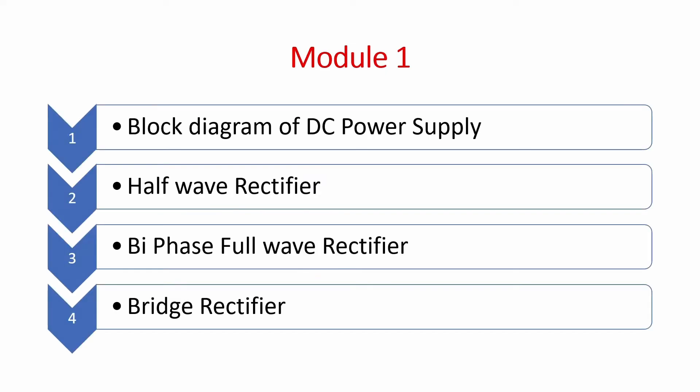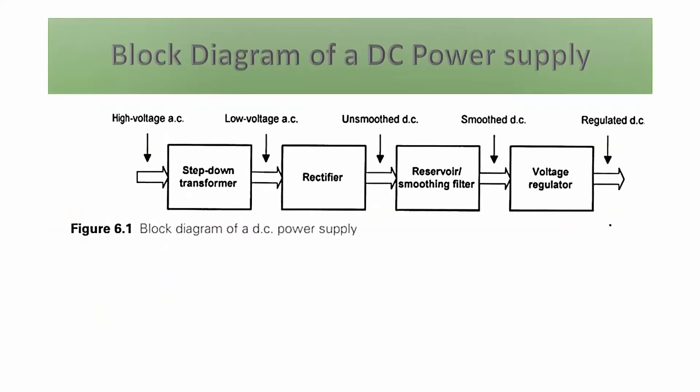In Module 1, the topics covered are: block diagram of a DC power supply, half-way rectifier, bi-phase full-way rectifier, and bridge rectifier. We will start with the block diagram of the DC power supply.